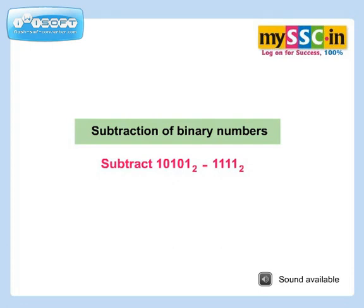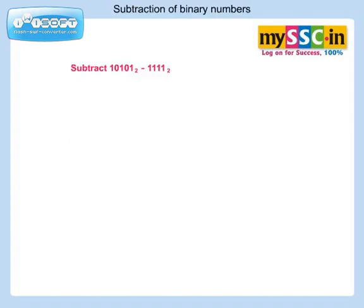Subtraction of binary numbers. Let's do the given subtraction: 10101 base 2 minus 1111 base 2. Arrange the numbers one below the other as we normally do for subtraction of decimal numbers. Let's do the subtraction of numbers from right to left.